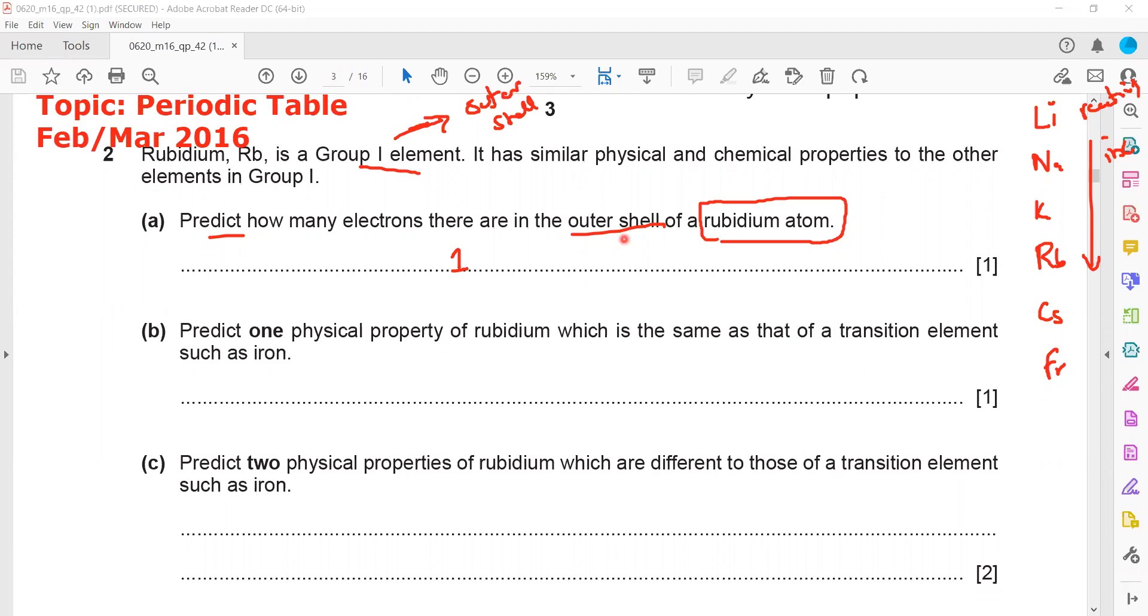Which physical property resembles iron? Iron is a transition element. We have to say a property which resembles iron or any other transition element. We can mention that it will be shiny because all metals have a shiny surface, but you cannot say it will have a high melting point because group 1 will have low melting point.